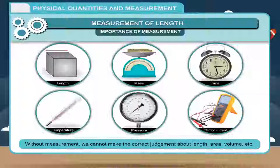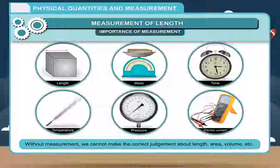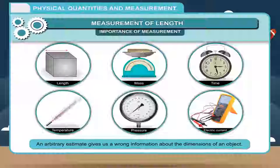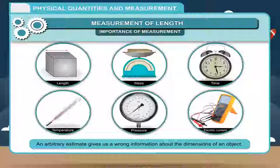Without measurement, we cannot make the correct judgment about length, area, volume, etc. An arbitrary estimate gives us wrong information about the dimensions of an object.